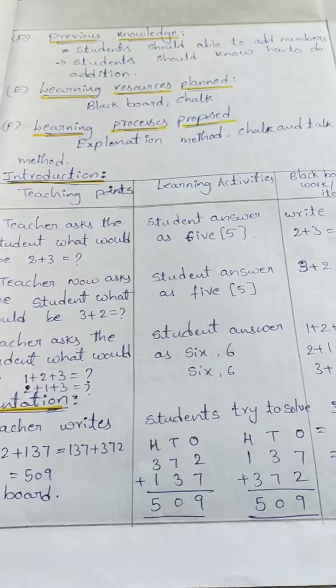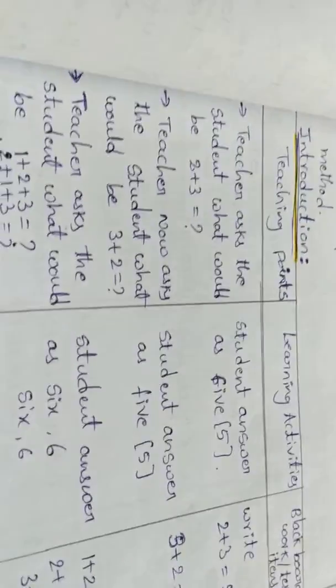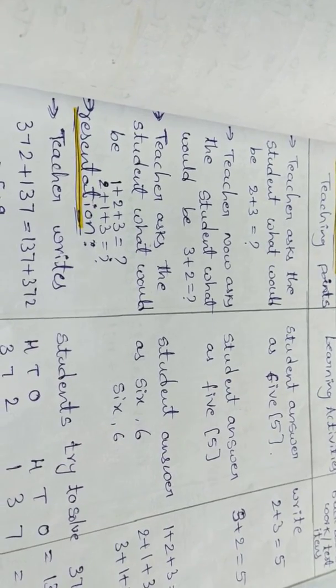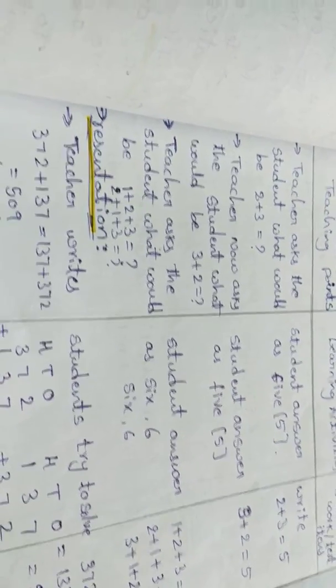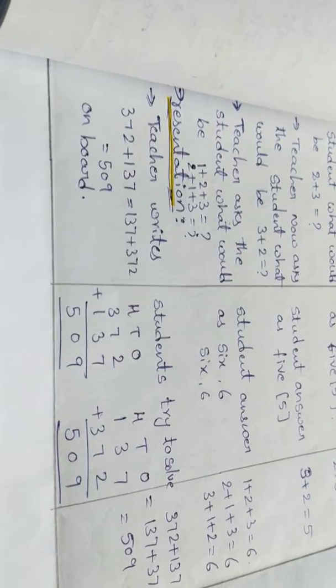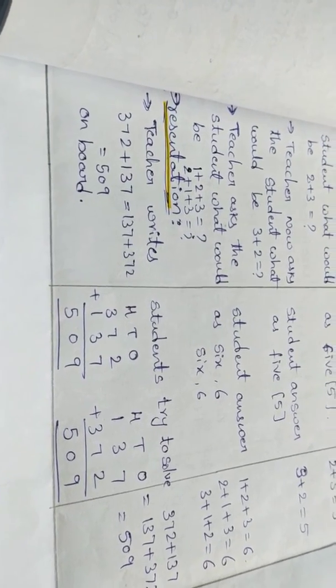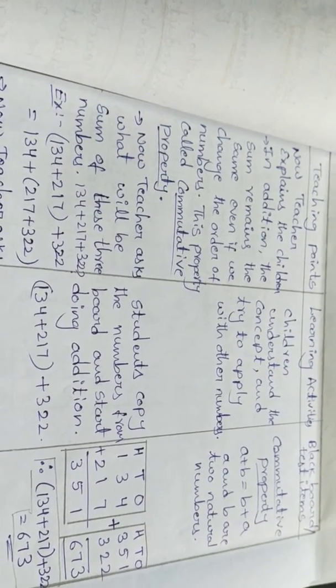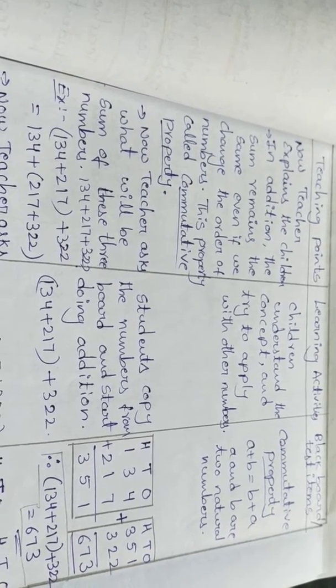The planning process and proposed method are outlined. In the introduction, the teacher will introduce the topic and engage students — for example, asking what two plus three equals. This is followed by teaching points, learning activities, and blackboard work.